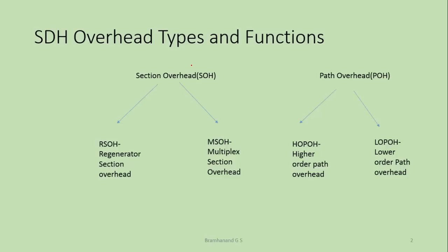Overhead can be categorized into two types: one is section overhead, and the second is path overhead. In the last session we discussed what is the need for regenerator section and the importance of overhead in managing the regenerator section. Similarly, multiplex section overhead manages the multiplex section. Higher order path overhead is for managing client signals whose mapping is VC4 or VC3, and lower order path overhead is for VC11, VC12, VC2, etc.